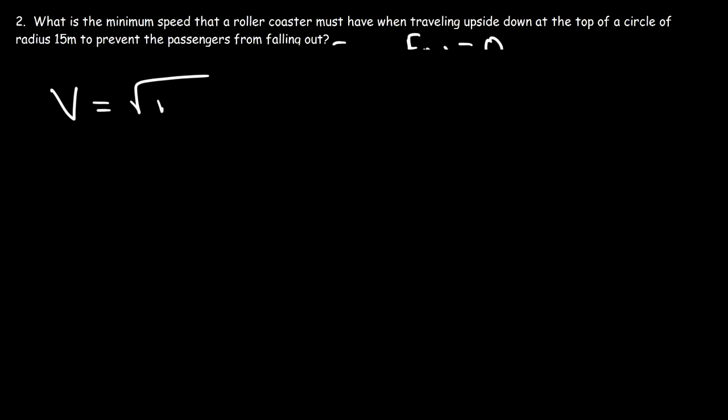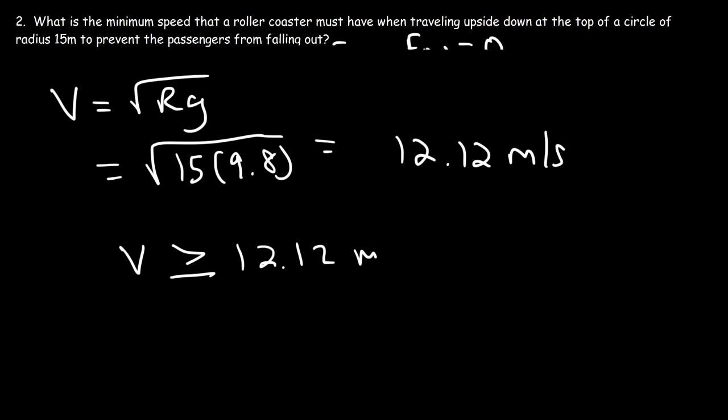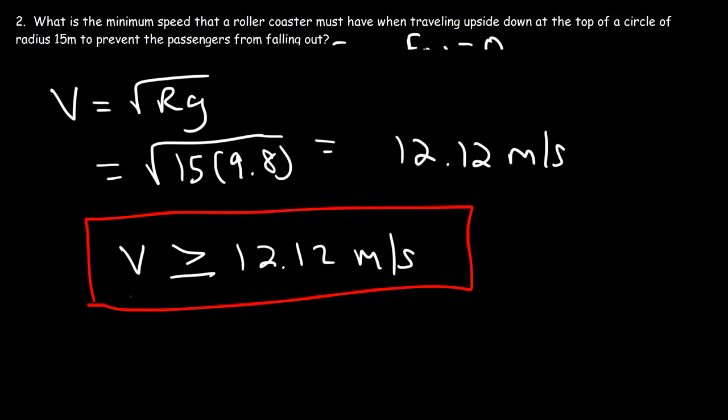With a radius of 15 meters and gravitational acceleration of 9.8, the minimum speed is √(15 × 9.8) = 12.12 meters per second. So in order for the passengers not to fall out, the speed must be at least 12.12 meters per second. That concludes the problem.